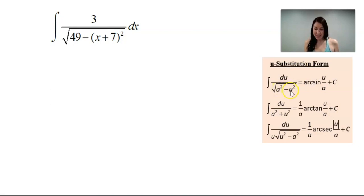First, you can see that u squared would match up with x plus 7 squared. Therefore, my u is x plus 7.